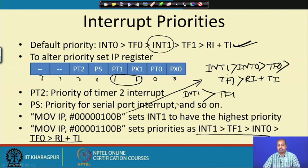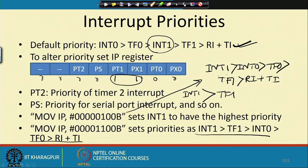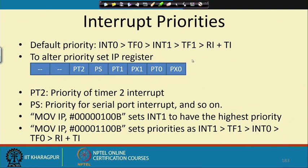You cannot set interrupt priorities arbitrarily — some combinations are feasible but not all simultaneously. This flexibility is particularly useful in microcontroller-based embedded applications where you may need to take interrupts from different sources at different phases of the program, requiring different priority settings without changing hardware connections.